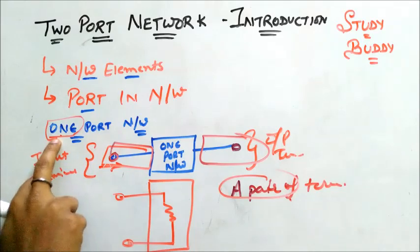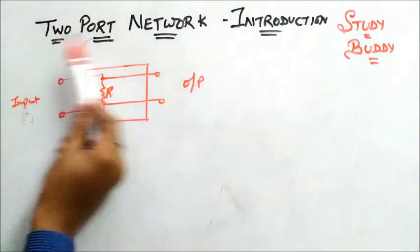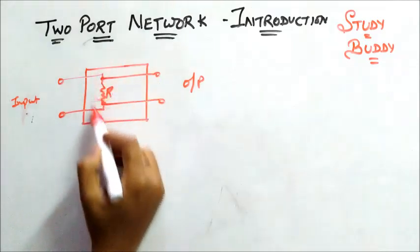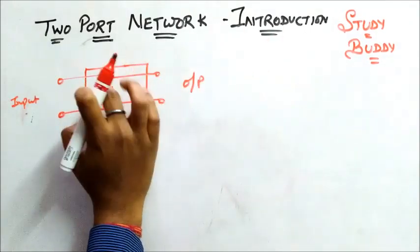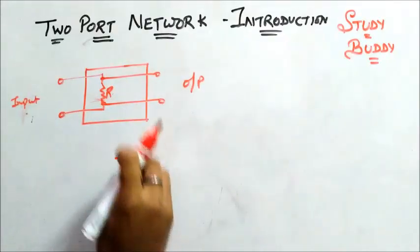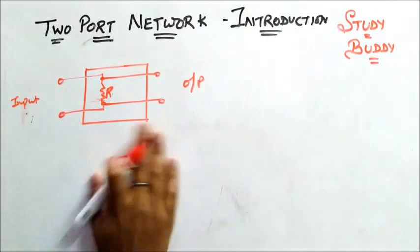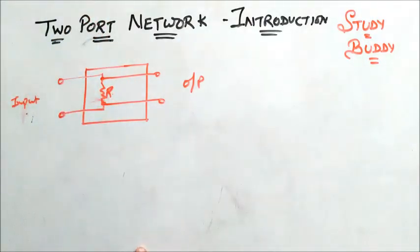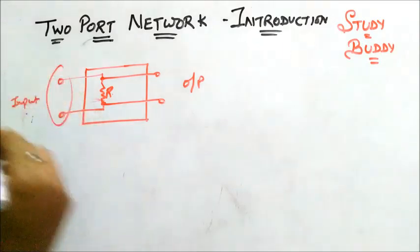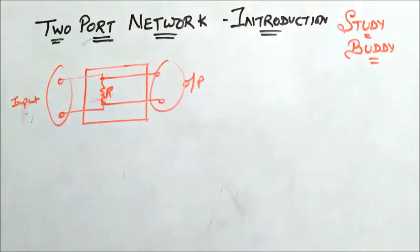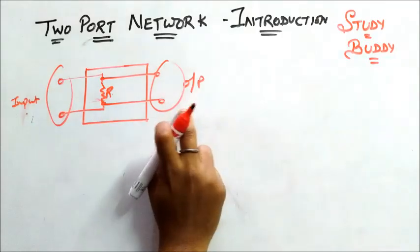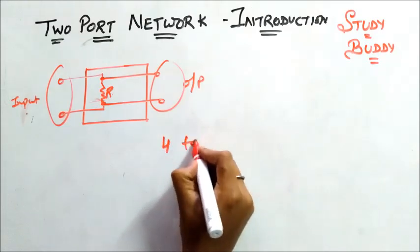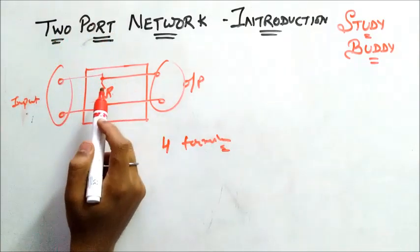Next we will move on to two port network. Here I have designed a two port network. The network could be anything — it could have resistors, capacitors, or inductors. A two port network is defined as one which consists of two pairs of terminals: one pair on the input side and one pair on the output side. So I will be having a total of four terminals for a two port network.